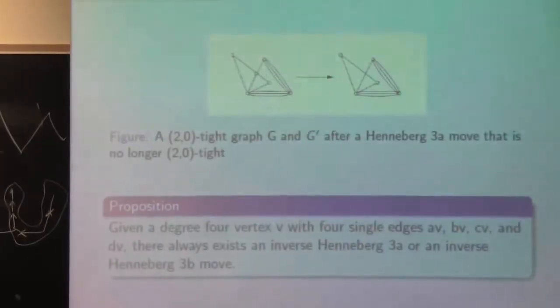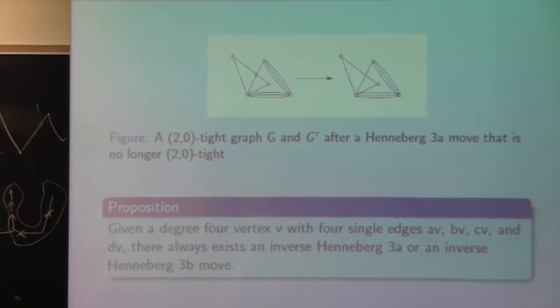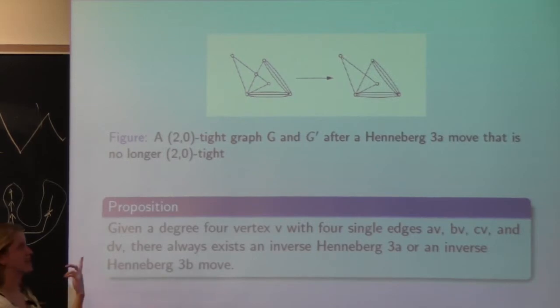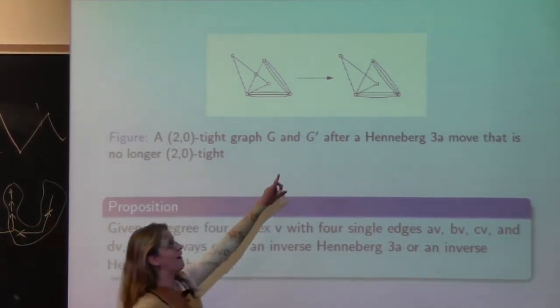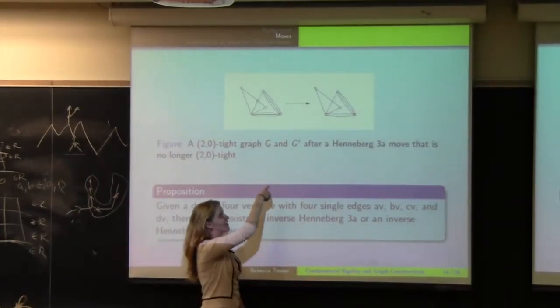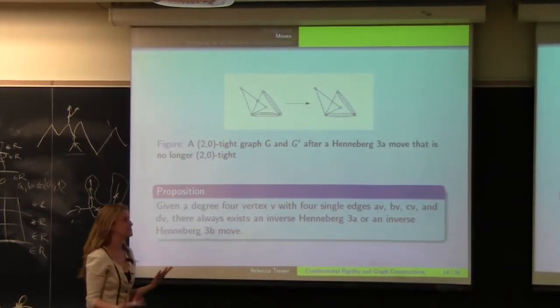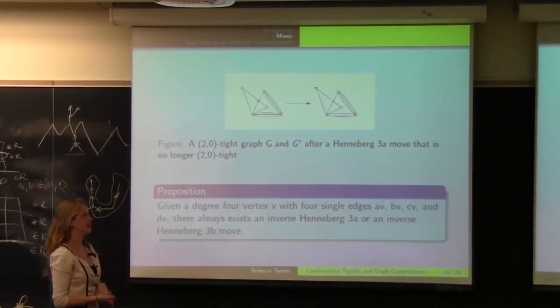So a 2-0-tight graph after a Henneberg 3a or 3b move is not necessarily another 2-0-tight graph. So for example, we have the same subgraph problem here. If you see all the way up there, that graph is again a 2-1 graph, so it's not allowable in a 2-0-tight graph.